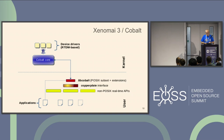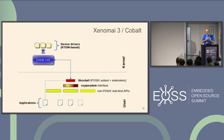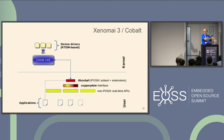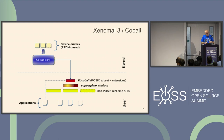This is an example of the architecture. You have the application, the libcobalt which implements the skins including POSIX — very important for development — and the Cobalt core. There is a specific approach for Xenomai: a dedicated kernel interface called RTDM, Real-Time Driver Model. This could be an issue because if you use Xenomai you need to adapt your driver, since the driver will be executed by the Xenomai kernel. It's a Linux model but not a Linux driver — there are specific calls.